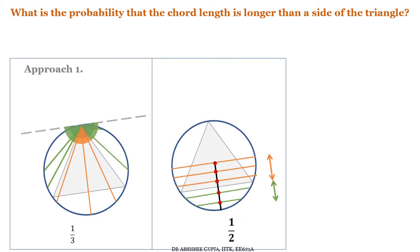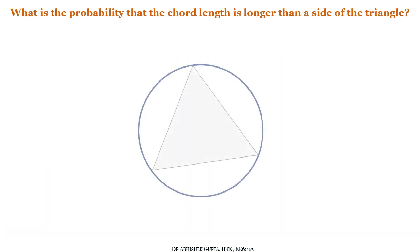This is surprising because we were expecting 1/3 from Approach 1, but instead Approach 2 gives us 1/2. We do not yet know which one is correct, so we look at one more approach hoping it will confirm one of these answers.